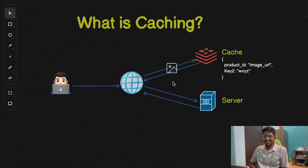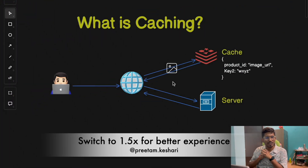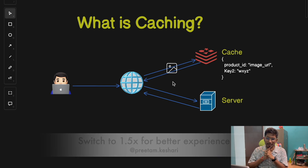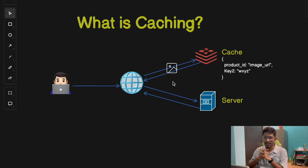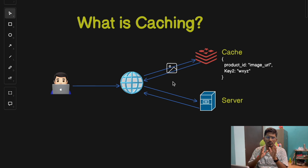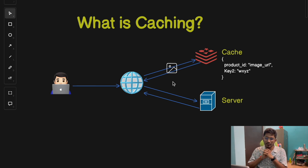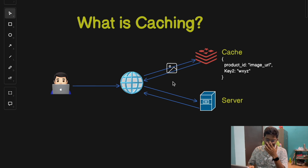Hey everyone, welcome back to the channel. Today we are diving into a crucial concept in the world of distributed systems and high performance applications: caching. We'll go through what caching is, explore different types of caches, and then discuss two often overlooked yet essential topics — cache invalidation and cache eviction policies. So if you're a developer, tech enthusiast, or just someone looking to understand the backbone of modern software architecture, this video is for you.